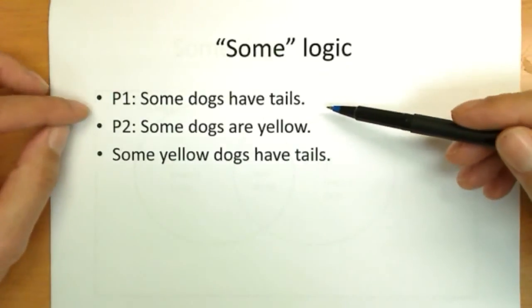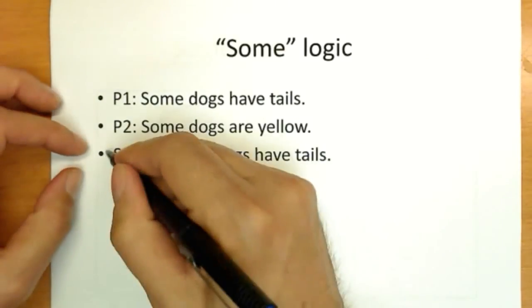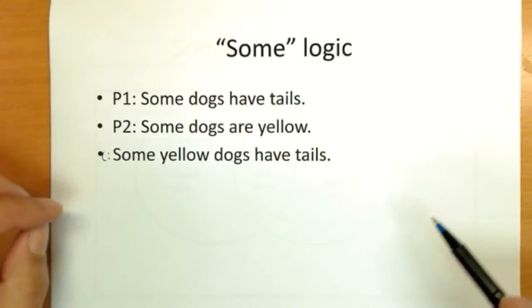Premise number one, some dogs have tails. Premise number two, some dogs are yellow. And the conclusion, some yellow dogs have tails.